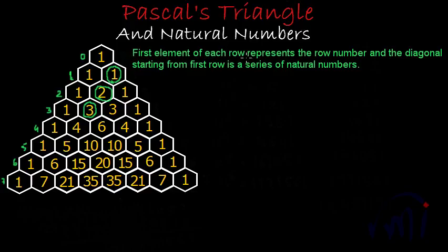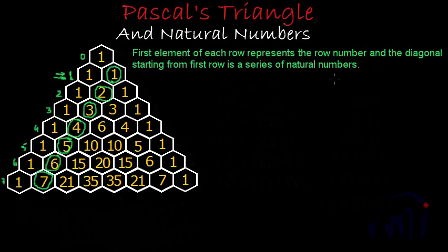The first element of each row represents the row number, and the diagonal starting from the first row is a series of natural numbers. This is the first row and these are the first elements. The first element of the 6th row is equal to 6, and the first element of the 7th row is equal to 7. So the first element of each row of Pascal's triangle is equal to the row number itself, and the diagonal starting from the first row is a series of natural numbers.